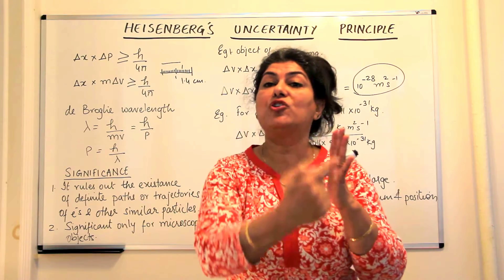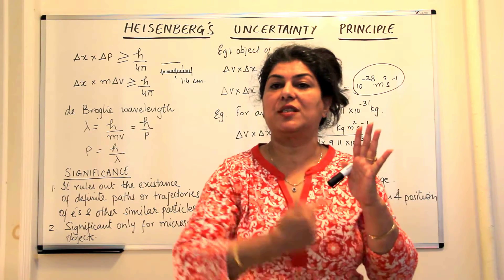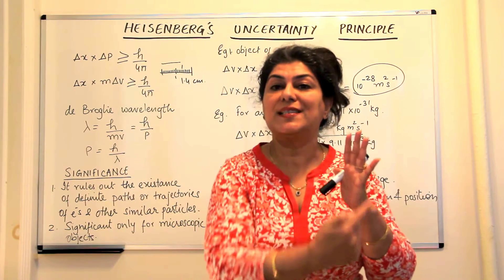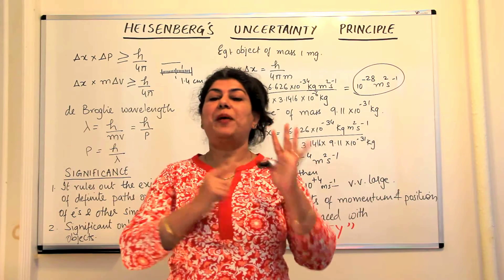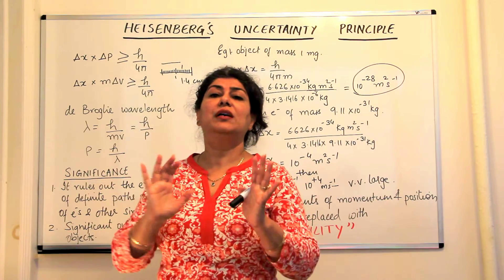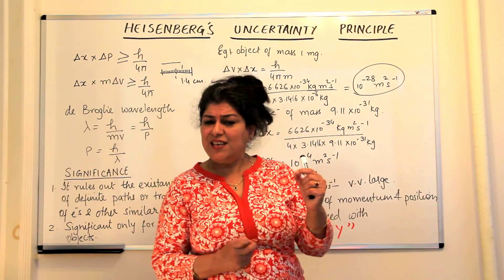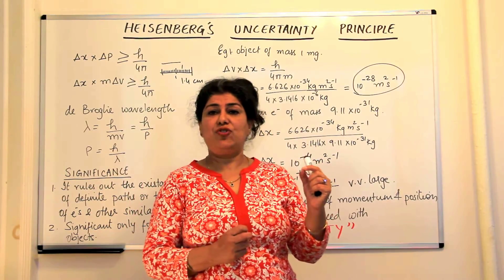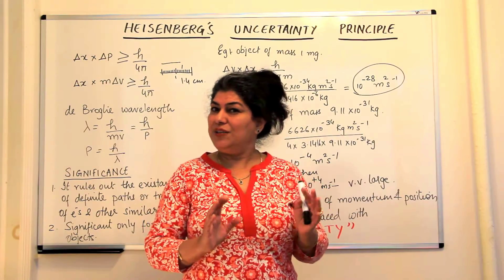It's not possible in Bohr's model, as he said, for there to be definite paths that electrons follow, and as long as the electron is in the orbit, it neither loses nor gains energy. These definite paths—it's impossible to find the definite path. To talk in terms of certainty for an electron or subatomic particles seemed difficult now.